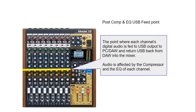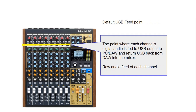A reminder that any compression and EQ settings once recorded in your DAW cannot be undone. That's why I would personally recommend leaving the pickup point at the default USB feed point just after the gain. To learn how to change this default USB point, consult the Tascam Model 12 manual, or I may make a future video covering this topic — so make sure you subscribe to my channel.